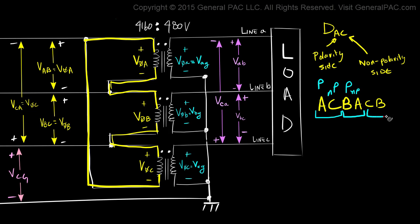And this right here is the third pattern and what we are saying is that the polarity side of winding C is connected to the non polarity side of winding B.